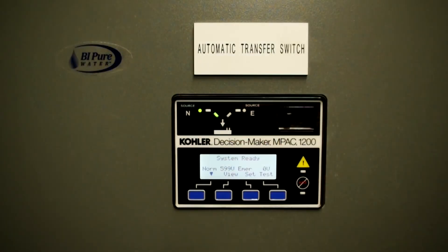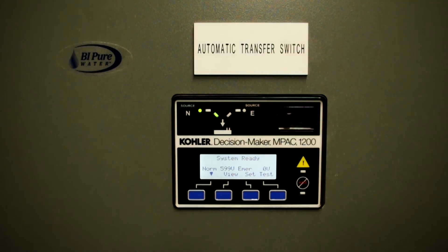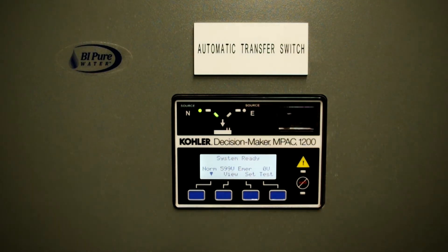The automatic transfer switch will tell you whether you're on N for normal power or E for emergency power. It tells you how many volts you've got coming into the plant through its line or emergency power.